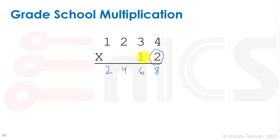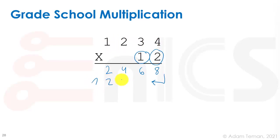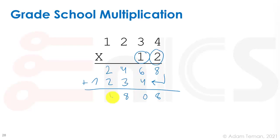Then we move over to the next numeral, which is in the tens place. We shift our partial product by 10, multiplying it by 10. Since the digit is 1, we just copy: 1 times 4, 1 times 3, 1 times 2, 1 times 1, giving us 1 2 3 4. We add these two partial products together, carry the 1, and get our final product.